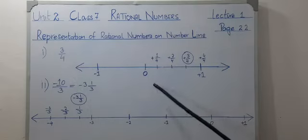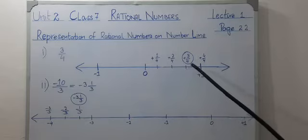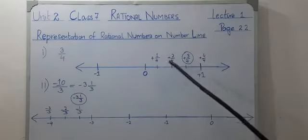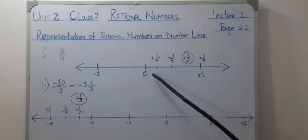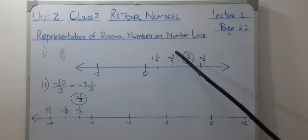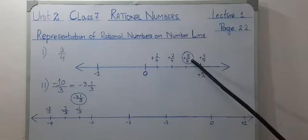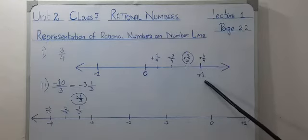we take one part from 0 and mark 3 by 4 here. Now, you can see from 0: 1 by 4 first region, 2 by 4 second, 3 by 4 third, and the fourth one is equal to 1.